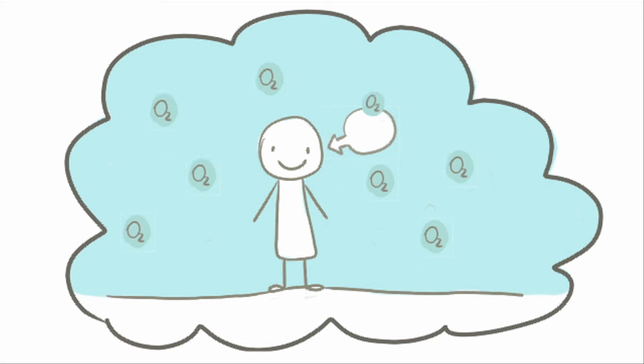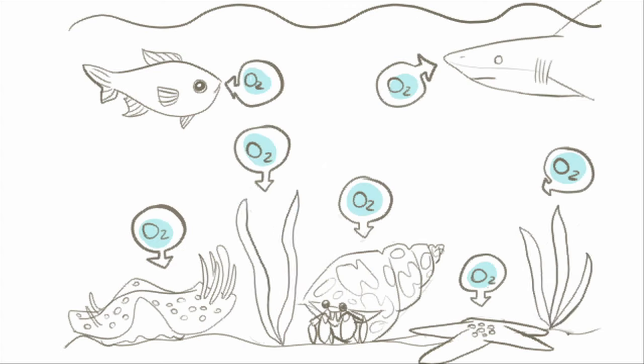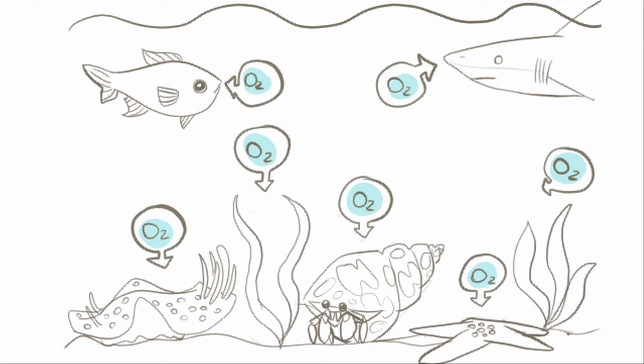Imagine a world where we weren't surrounded by air. Without the oxygen in the air that we breathe, we wouldn't survive very long. But what about animals underwater? They need oxygen too. Where do they get it?